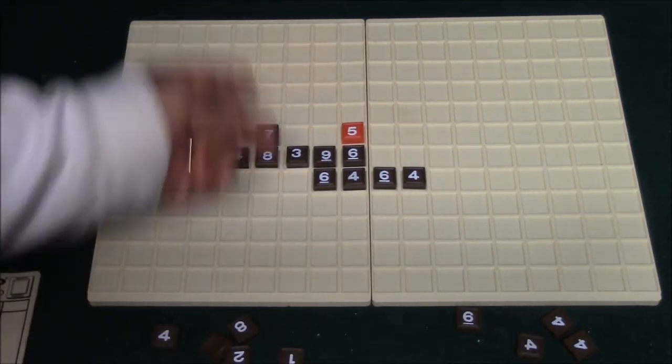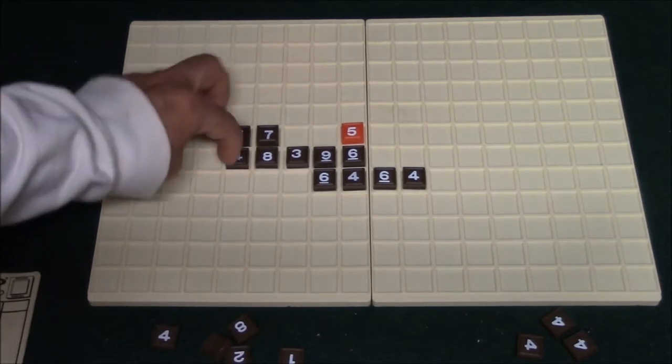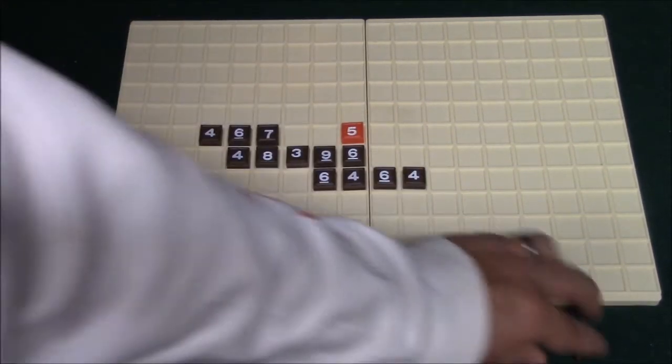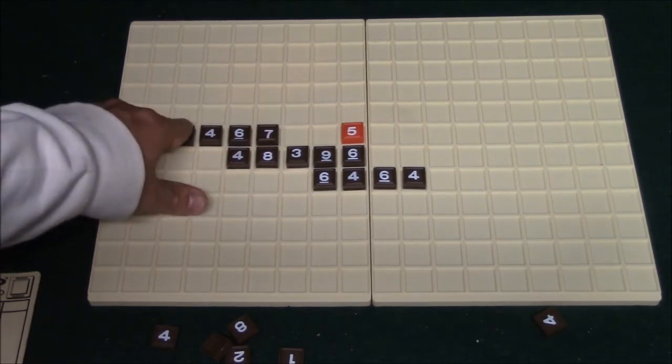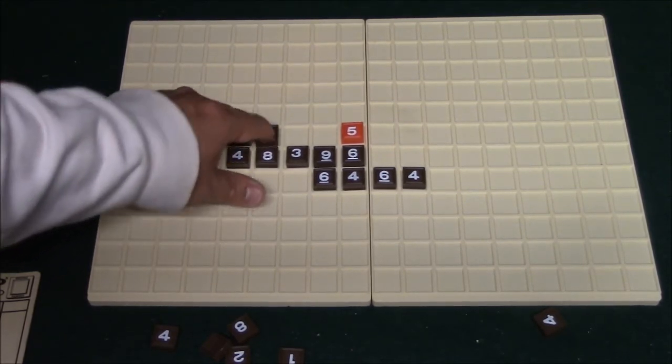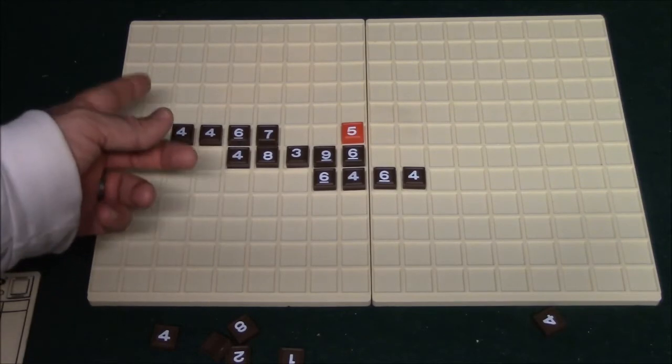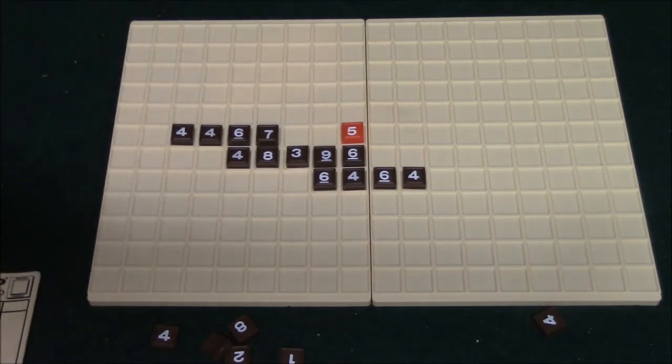Okay, so right here we've got 15. Right here we've got 10 that we've made, and then I'm going to play these two, and this is going to equal 20 points for this, 10 points for this, and 15 points for this, and that is going to be a total of 45 points. I hope my math is right.